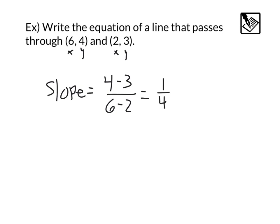Perfect. Now that we have a slope, it's just like the last example we did. We can choose either of these points, either 6, 4 or 2, 3. I'm going to go for the 2, 3 example. So we'll take that y equals mx plus b.